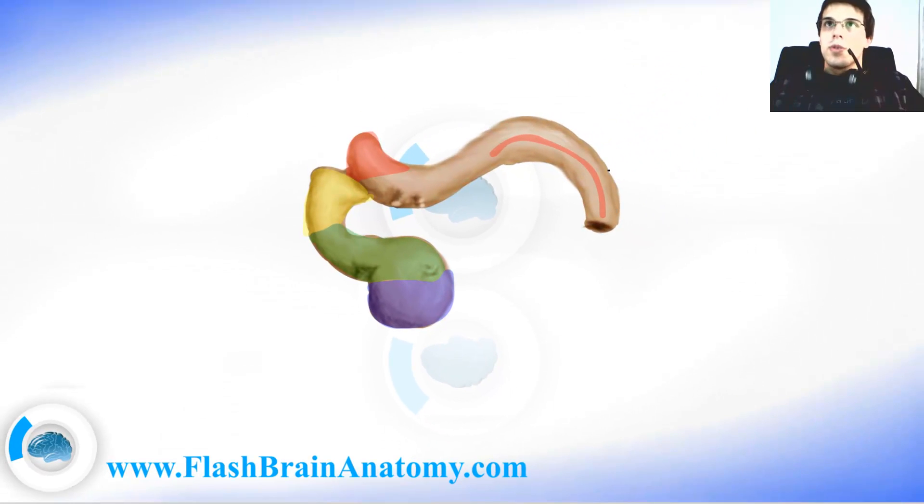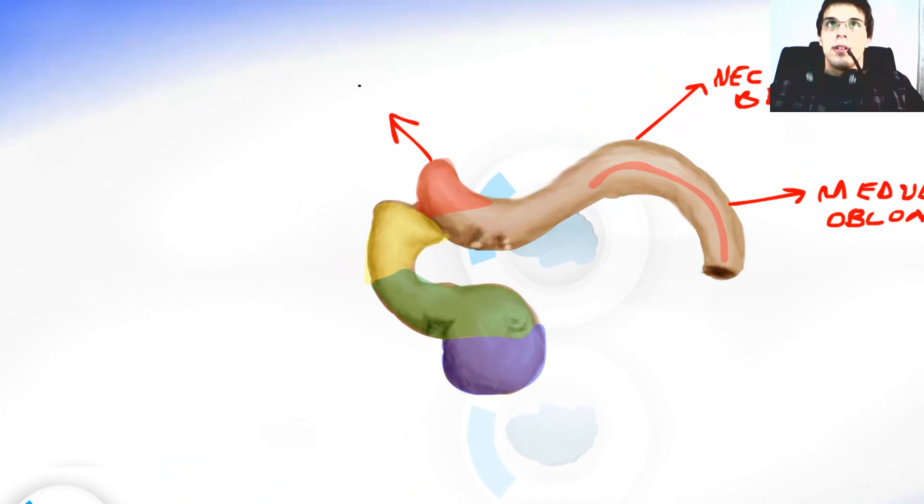So let's repeat all this. We had the medulla oblongata. This curvature over here is the neck bend. Then we had the cerebellum, the mesencephalon.